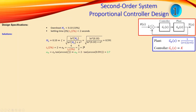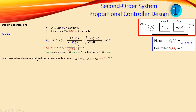With both the real and imaginary parts determined, the dominant closed-loop poles can be expressed as -2 ± j2.7. Our design point is s1 = -2 + j2.7 (taking the one with the positive imaginary part). But the question is: can we actually use this design point for our system?